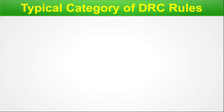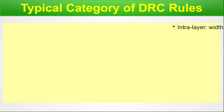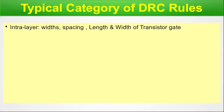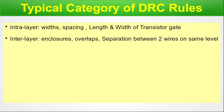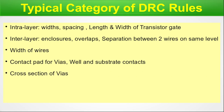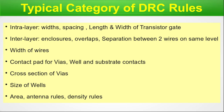Typical categories of DRC rules: intralayer rules cover width, spacing, and length and width of transistor gate. Interlayer rules cover enclosures, overlaps, separation between wires on the same level, width of wires, contact pad for vias, well and substrate contacts, cross-section of vias, size of wells, area, antenna rules, and density rules. These categories help you navigate a large design rule deck without getting lost.